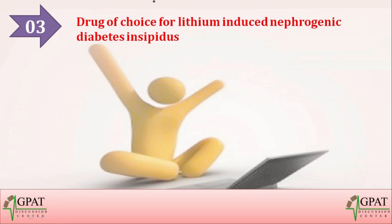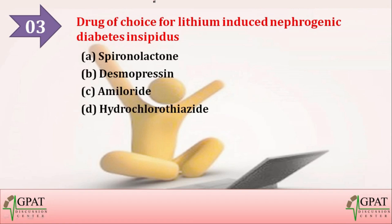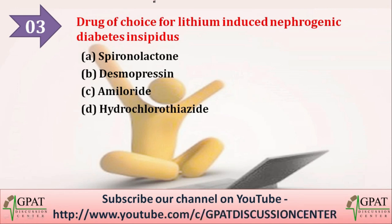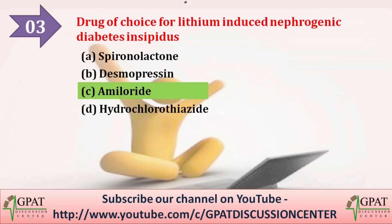Next question: Drug of choice for lithium-induced nephrogenic diabetes insipidus — option A spironolactone, option B desmopressin, option C amiloride, option D hydrochlorothiazide. The correct answer is amiloride.